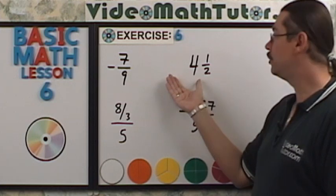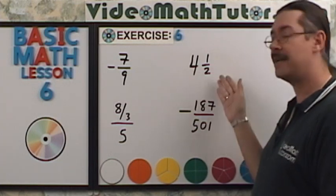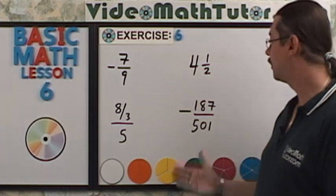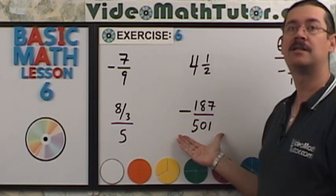Here, we have an integer with a fraction, a proper fraction. So this is actually a mixed number. Over here, again, the numerator is smaller than the denominator. This is proper.